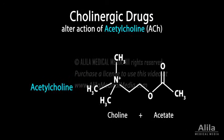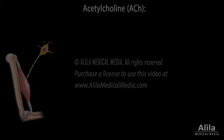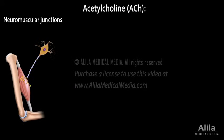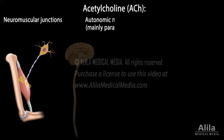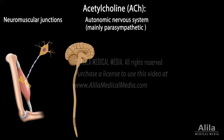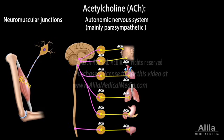Acetylcholine is a major neurotransmitter of the nervous system. It is released by motor neurons at neuromuscular junctions to stimulate skeletal muscle contraction. Acetylcholine is also the primary neurotransmitter of the parasympathetic nervous system, responsible for the body's rest and digest state.